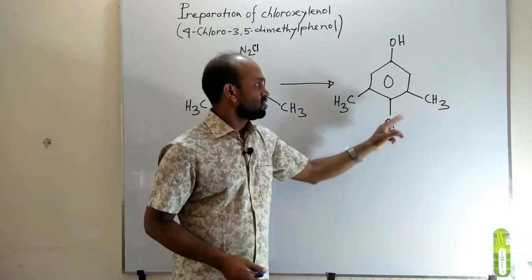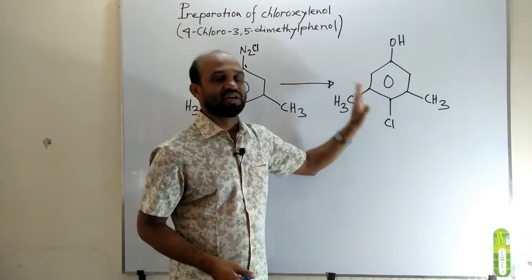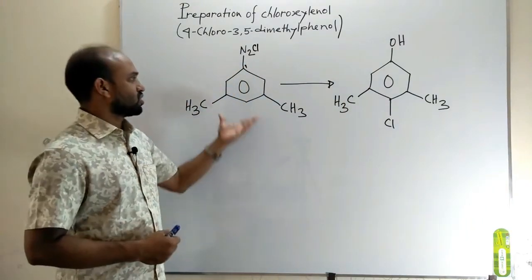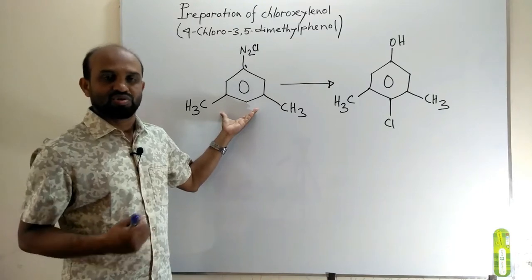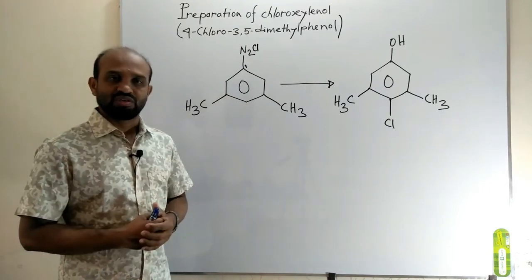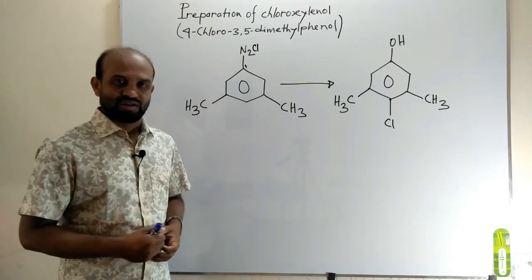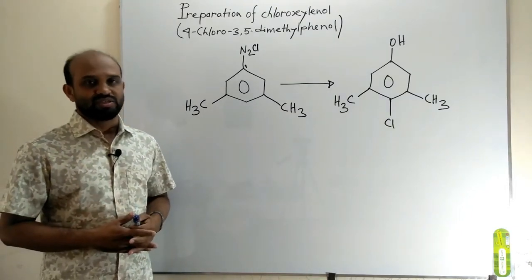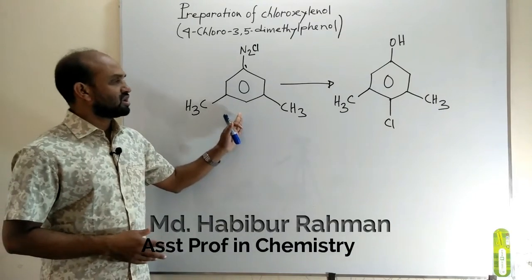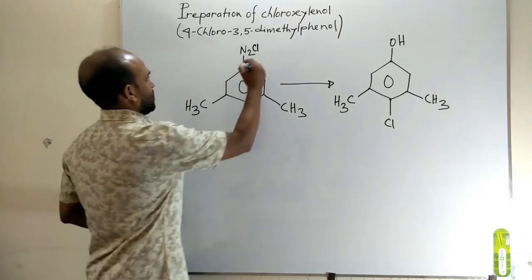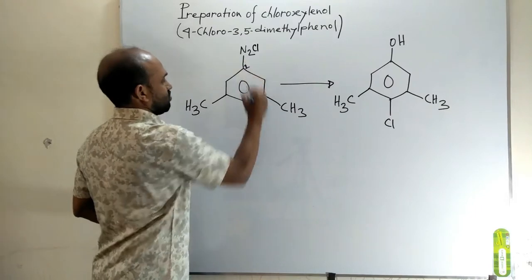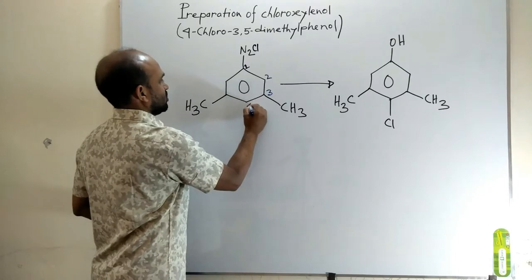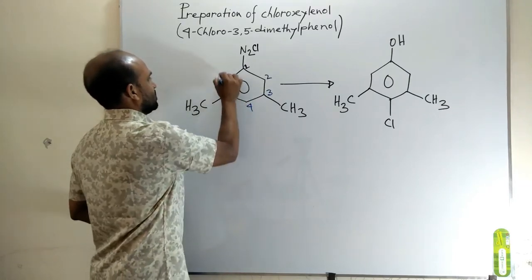This is the compound: 4-chloro-3,5-dimethylphenol. And this compound is prepared from this compound. Do you know what the name of this compound is? First of all, we have to number the carbon atoms of the benzene ring to determine the name of this compound. This is carbon number 1, carbon number 2, carbon number 3, 4, 5, 6.